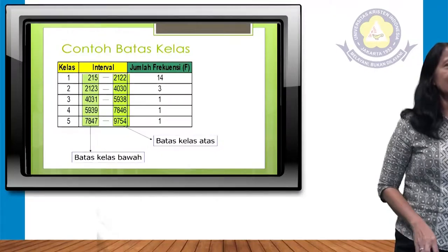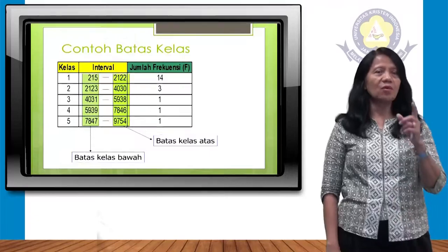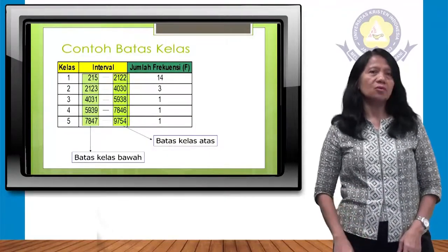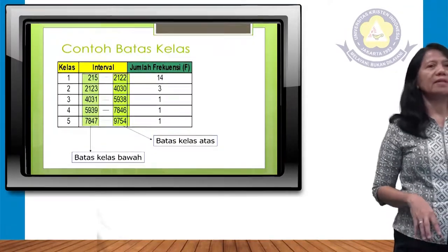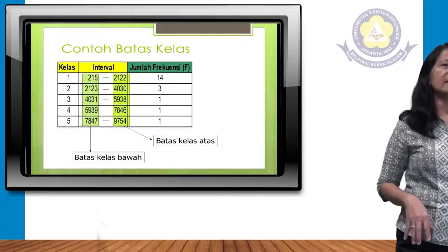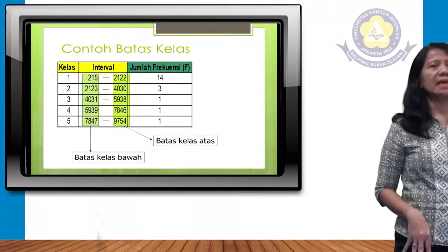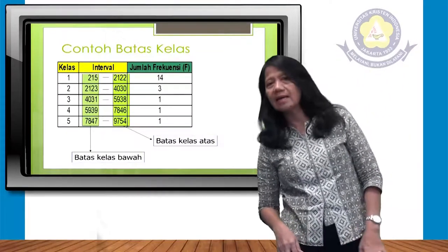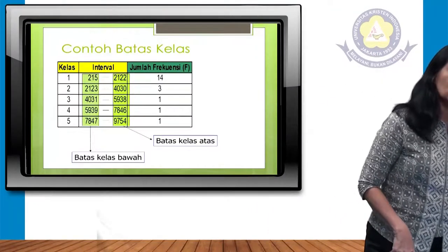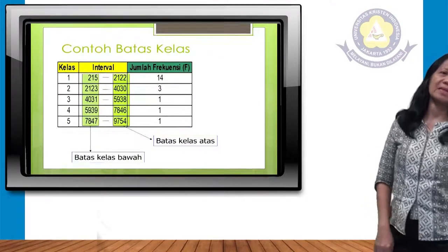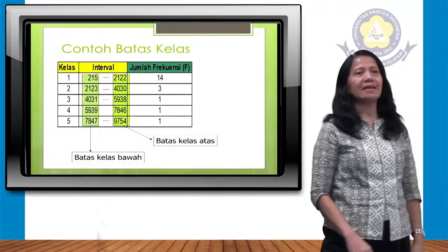Contoh batas kelas: kelas 1 sampai kelas 5, ada 5 kelas. Interval 215 sampai 2.122 — frekuensinya 14. Kelas 2: 2.123 sampai 4.030, frekuensinya 3. Begitu pula sampai kelas 5: 7.847 sampai 9.754. Batas kelas bawah adalah 7.847, sementara 9.754 adalah batas kelas atas.